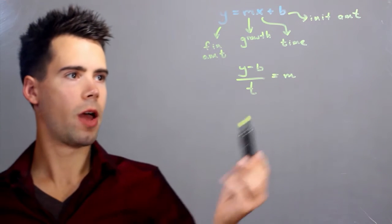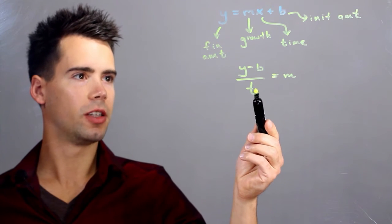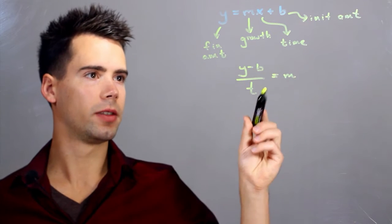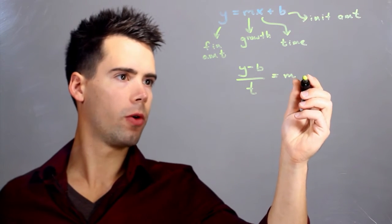So like I said earlier, m is our growth rate. T is the amount of time that has passed. And y minus b is the change in the amount of something. So we found m is our growth rate.